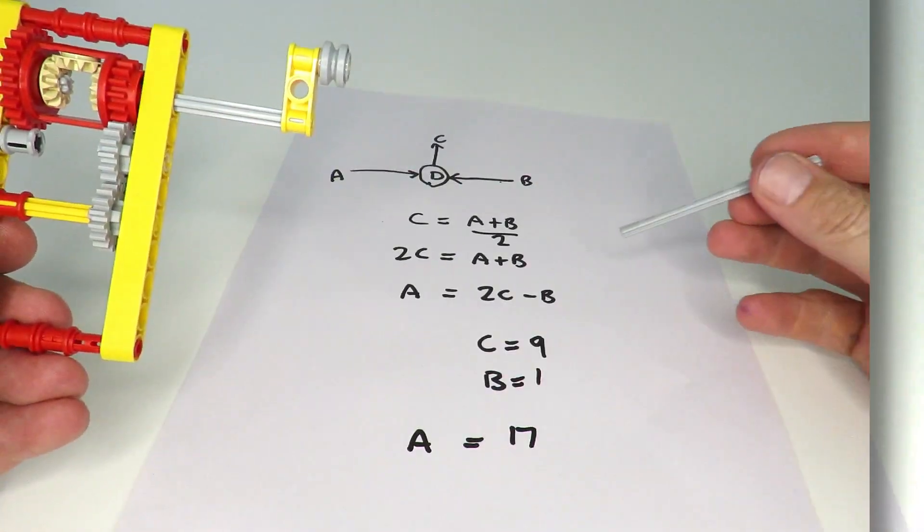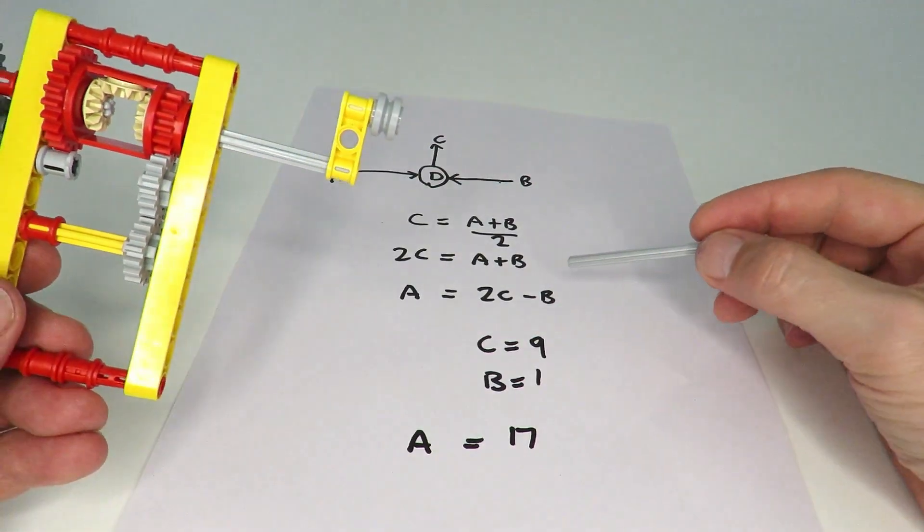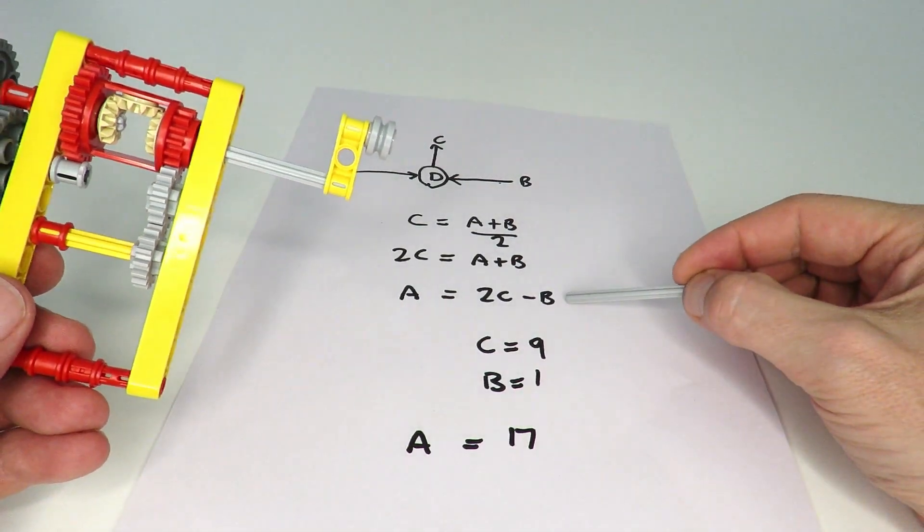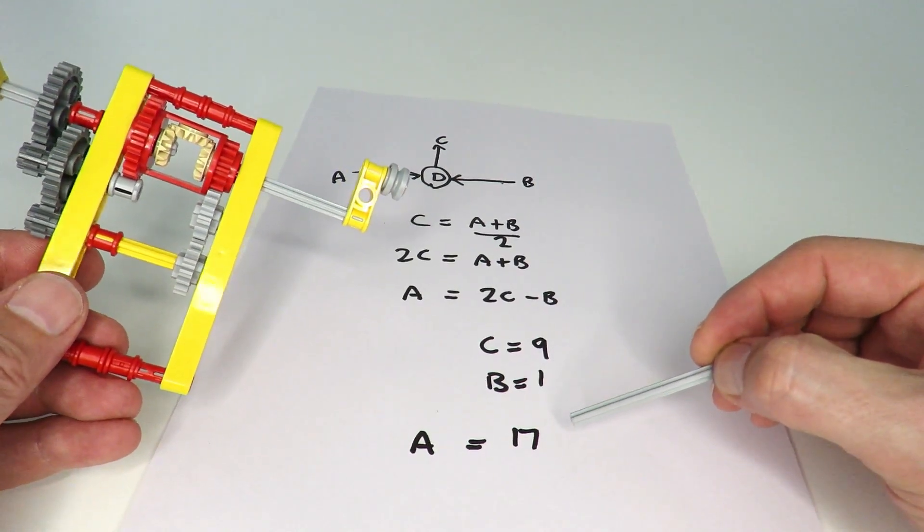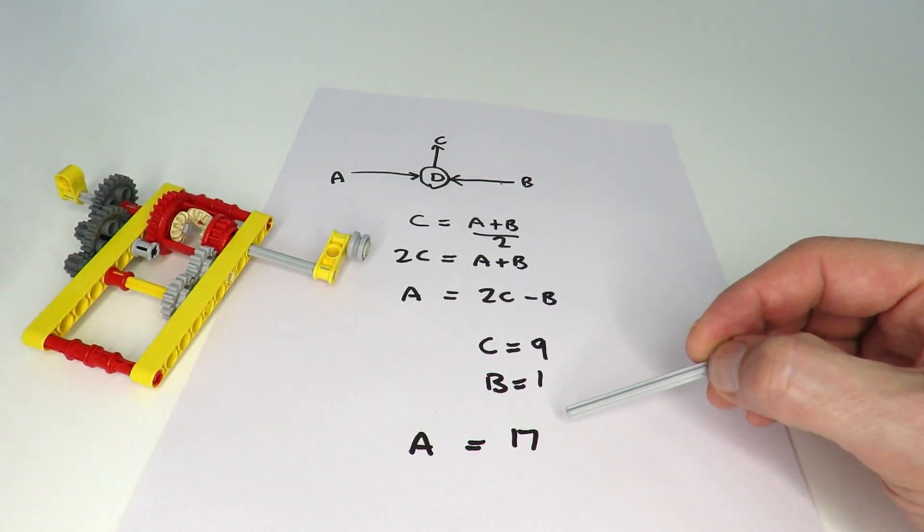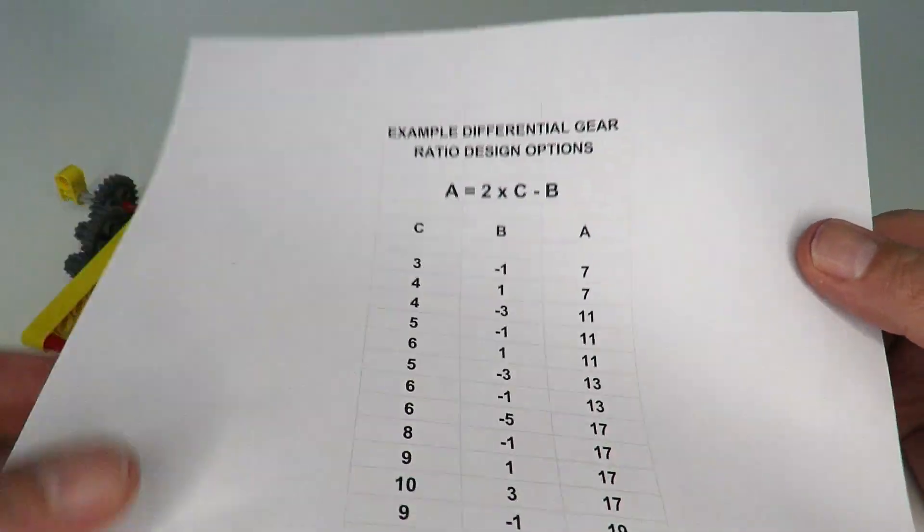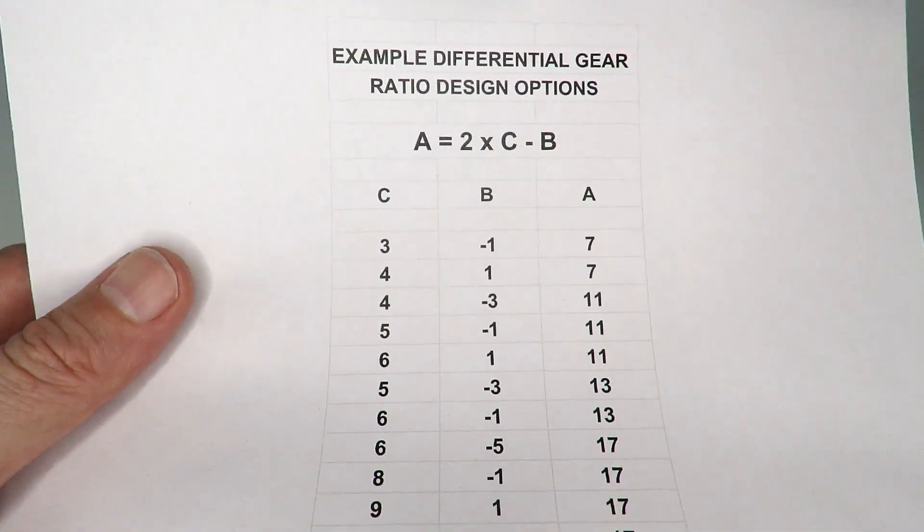Now, if you spend a bit of time playing around with the equation A equals 2C minus B, you'll realize you can create many of the prime gearing ratios that you might need. So, for example, I've created a list here of a number of ways of creating various different primes.